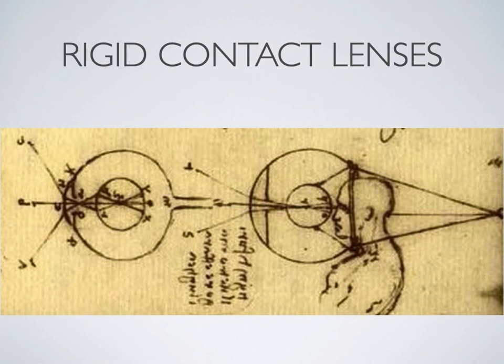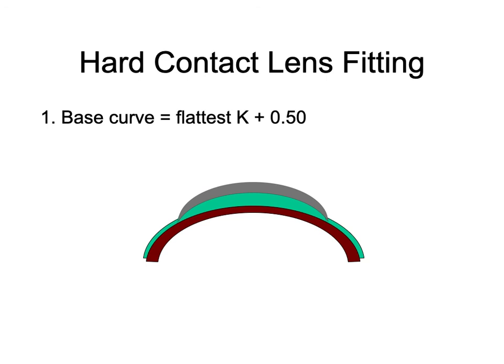Rigid contact lens fitting — as invented conceptually by Leonardo da Vinci (a bowl of water to submerge your face). For O-caps hard contact lens fitting: take the flattest keratometry of the cornea (flat meridian) and add a vault of 0.5 diopter steeper. Work in minus cylinder — be prepared to convert from plus cylinder if needed — then drop the cylinder entirely, as it is compensated by the tear lens.